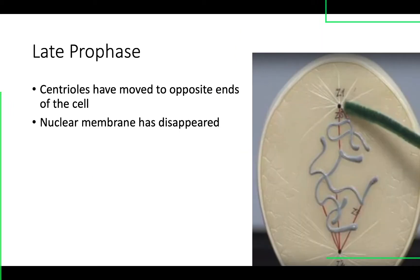In late prophase, one pair of centrioles has migrated all the way to one end and one pair to the other end. You can see the microtubules — the spindle apparatus is there like a net, and all of those chromatids are caught inside it like a fly in a spider web. We know this is late prophase because the spindle apparatus is fully formed and there is no nuclear membrane — it has disintegrated and is gone.